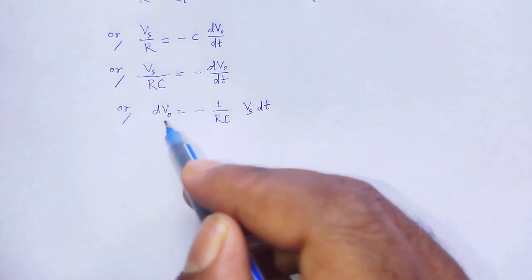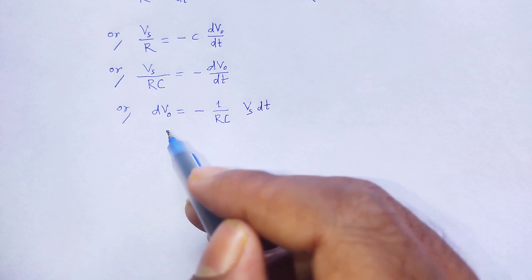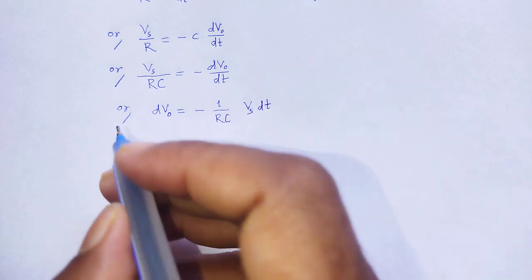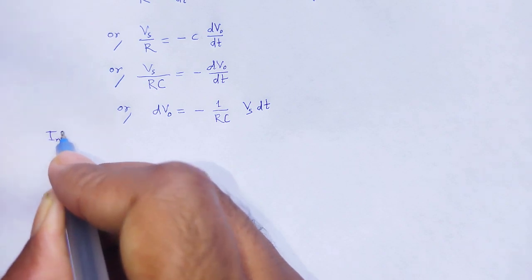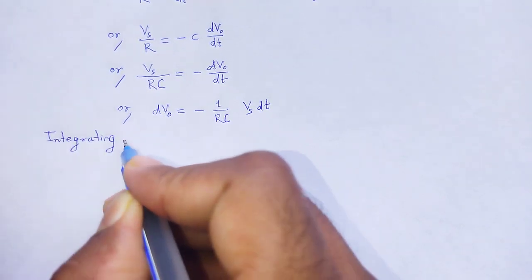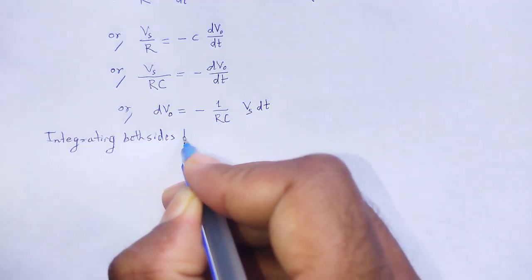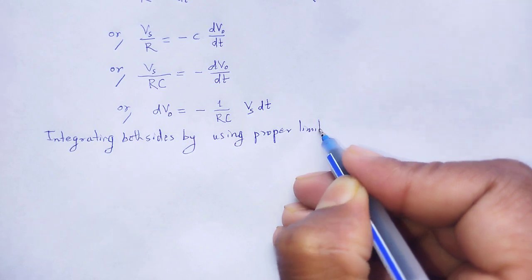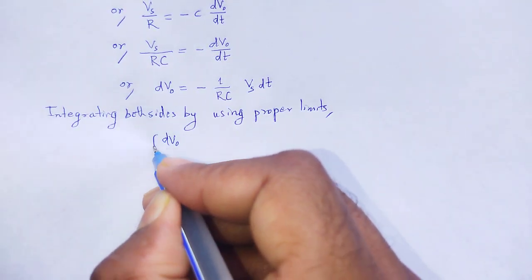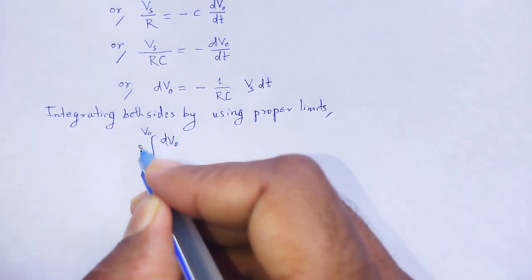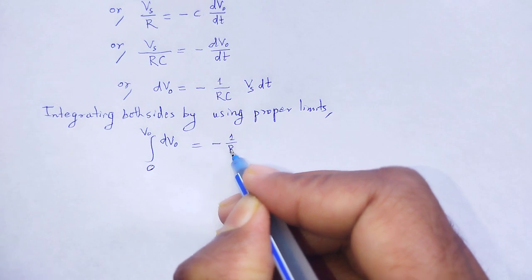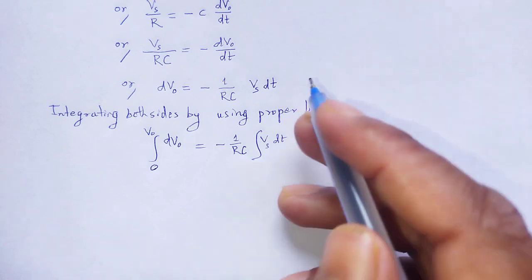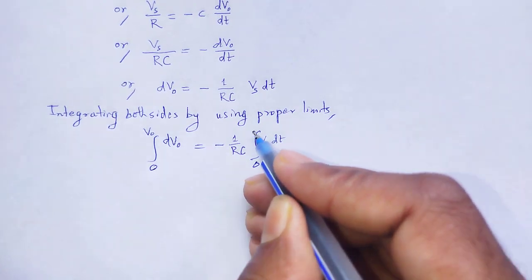The value of V0 is evaluated by integrating both sides with proper limits. Integrating dV0 from 0 to V0 on the left side is equal to minus 1 by RC times the integral of Vs dt from time 0 to t.